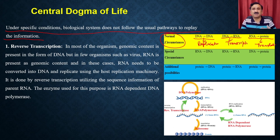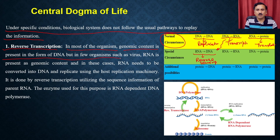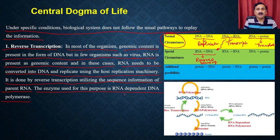One exceptional or special case is RNA-dependent DNA synthesis, called reverse transcription. This is the reversal of the normal transcription process. In most organisms, genomic content is present as DNA, but in some organisms such as viruses, RNA is also present as the genomic content. In these cases, RNA needs to be converted into DNA and replicated using the host machinery. This is done by reverse transcription, and the enzyme used is called RNA-dependent DNA polymerase, also known as reverse transcriptase.